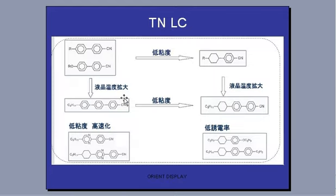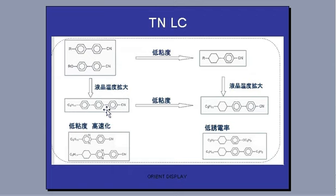All the liquid crystal used in display is a kind of chemical. You can see that it has a rod-like shape. If it is round, it cannot be made into good alignment, so it has to be rod-like — long, but not too long. If it is too long, you cannot twist. So this is a TN-LC, twisted nematic liquid crystal.